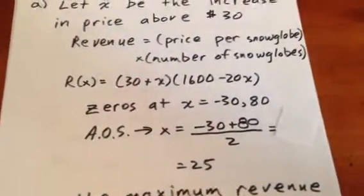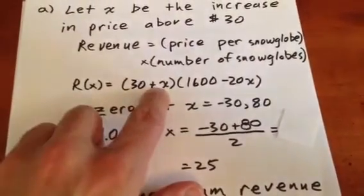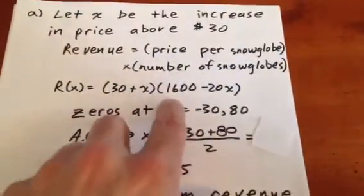We see that the zeros in this case are at negative 30, because 30 plus X equaling 0 implies X equals negative 30, or 80.